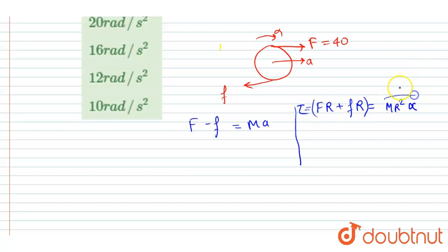And this is I*alpha. So this r will get cancelled out, and alpha*r is equals to a. So I will write F plus f is equals to m*a. Very simple.